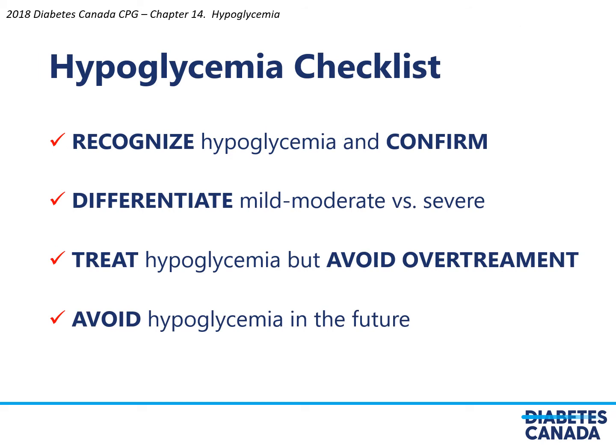The hypoglycemia checklist is as follows: recognize hypoglycemia and confirm; differentiate mild to moderate versus severe; treat hypoglycemia but avoid over-treatment; and avoid hypoglycemia in the future.